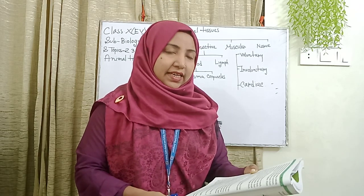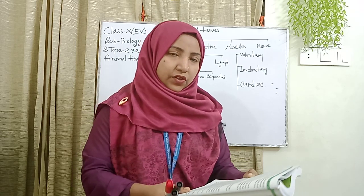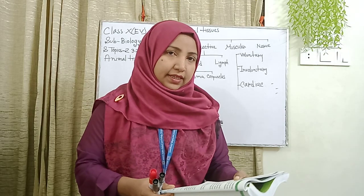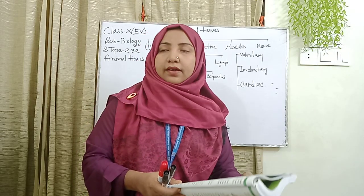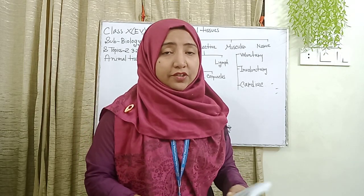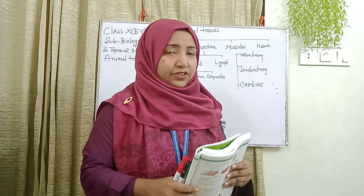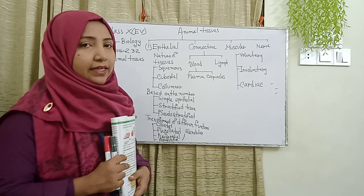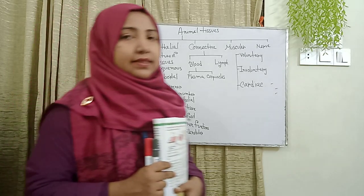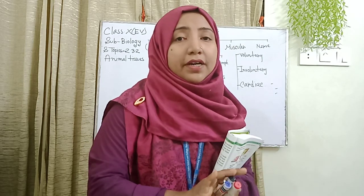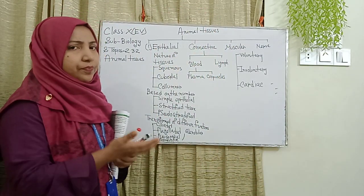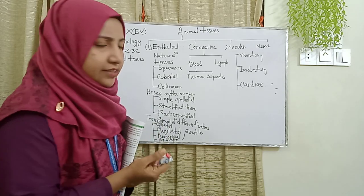Based on the size of the cell, the location in the animal body, and the nature of work, epithelial tissue is basically of three types. The first type is squamous epithelial tissue, the second is cuboidal epithelial tissue, and the third is columnar epithelial tissue. I will draw each of these. The squamous epithelial tissue is a very thin liner structure.